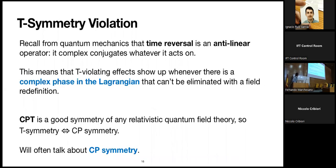There's another such symmetry which is time reversal. Similar to parity, which flips spatial directions, time reversal is an anti-linear operator that complex-conjugates things. T-violating effects show up as complex phases in the Lagrangian that can't be eliminated by any field redefinition. I'll talk interchangeably about T symmetry and CP symmetry, because in relativistic quantum field theory CPT is a good symmetry — so if T is a good symmetry, so is CP and vice versa.